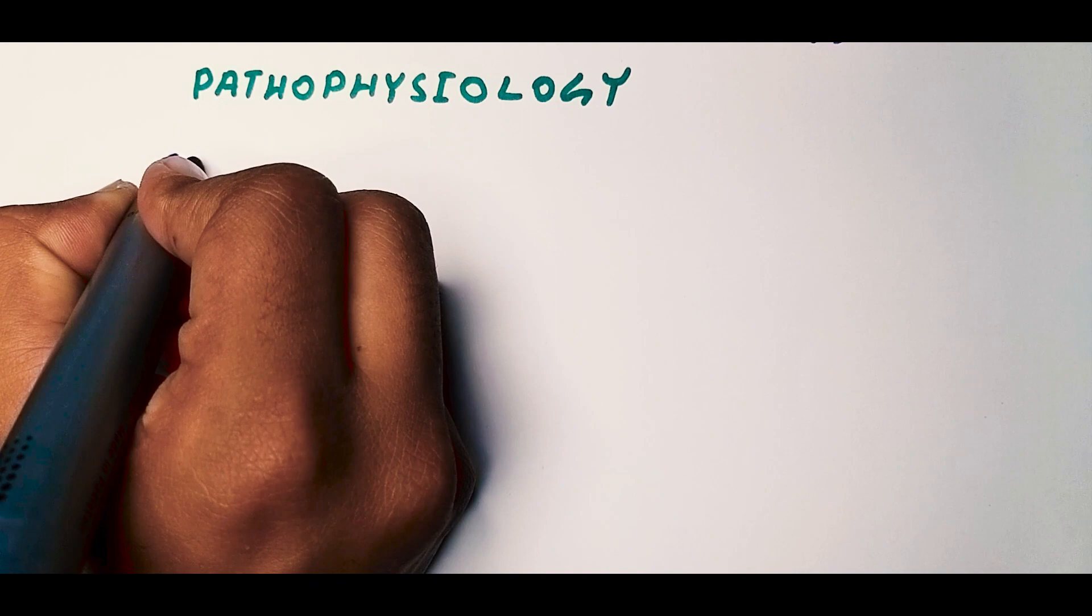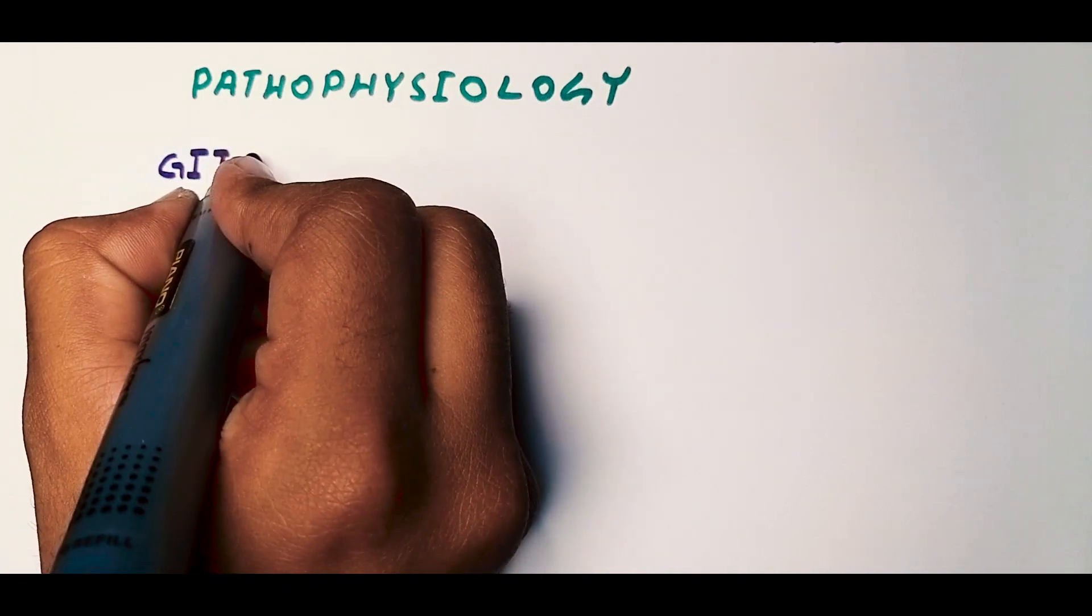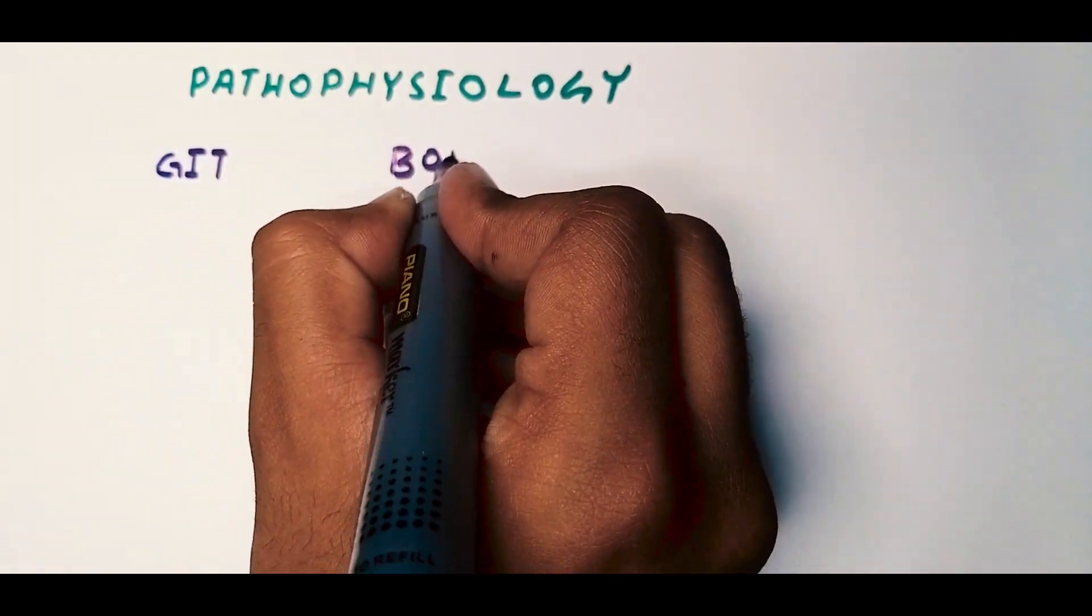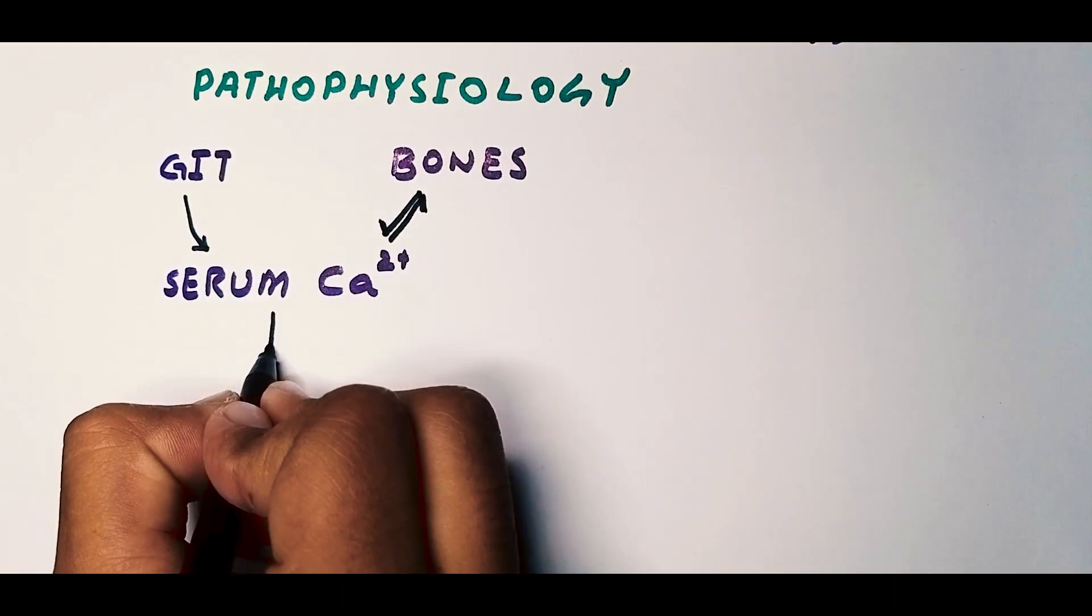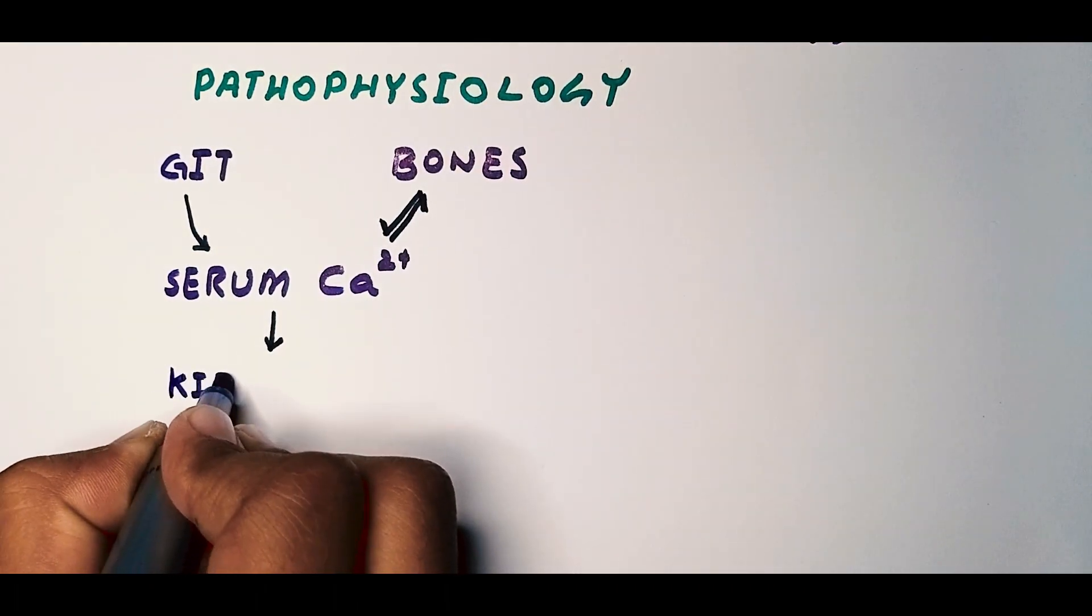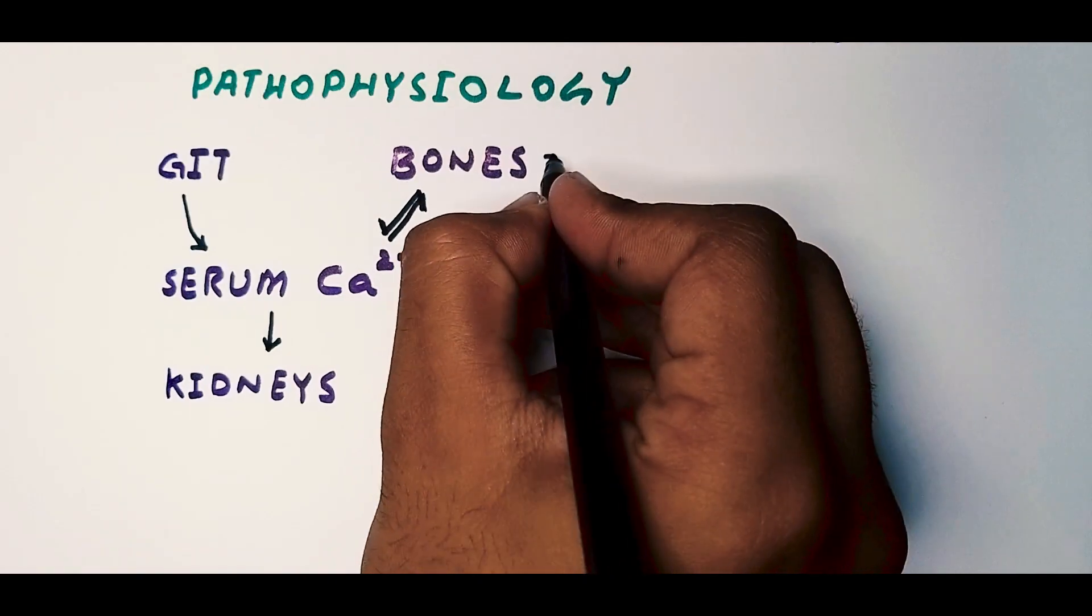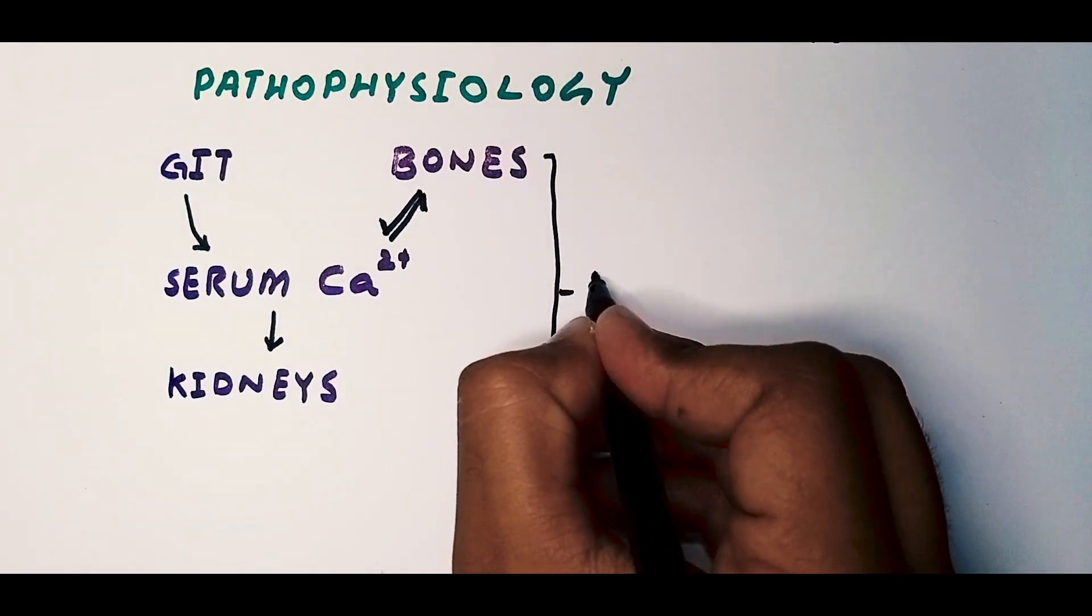And there's a fine balance maintained within the blood between the absorption through the GI tract, absorption and resorption between the bone and the serum, and how much calcium is excreted out through the kidneys. And all of this is regulated in the background by the parathyroid hormone.